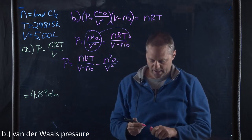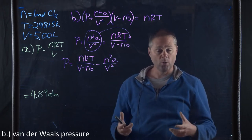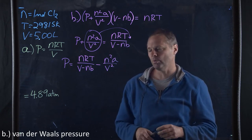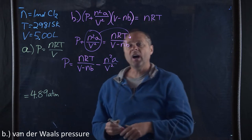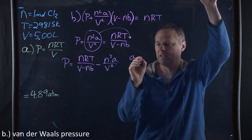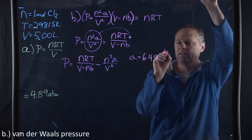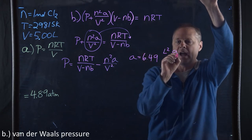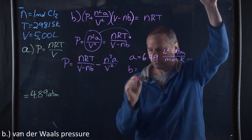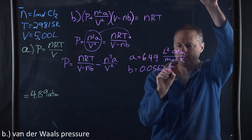In the Van der Waals equation, the constants a and b take into account the volume of the molecule and the interaction of those molecules with each other. A and B are constants found in a table. For chlorine, a = 6.49 L²·atm/mol² and b = 0.0562 L/mol.